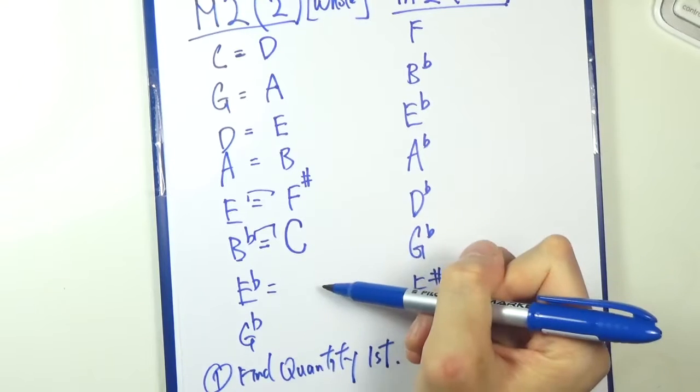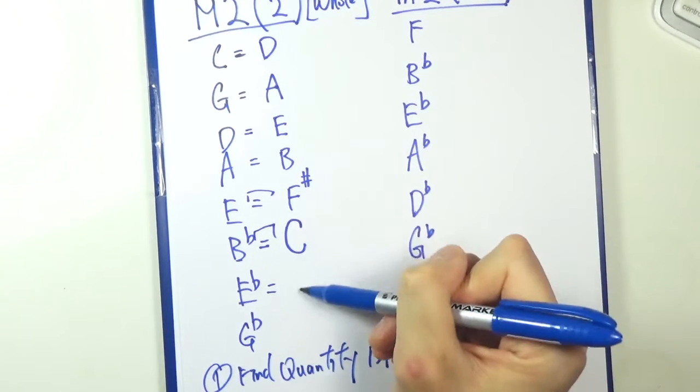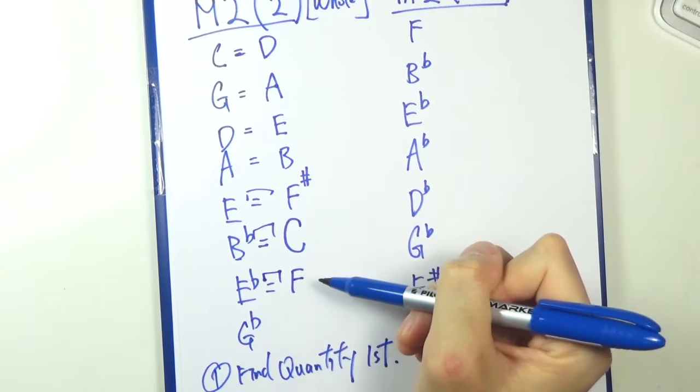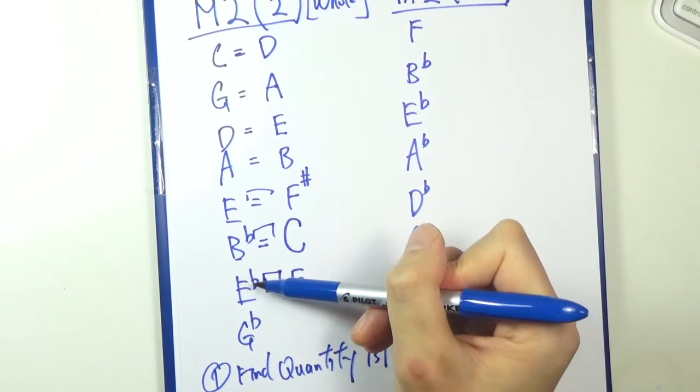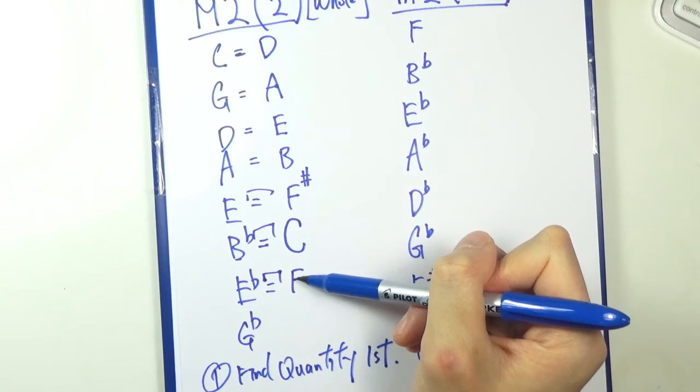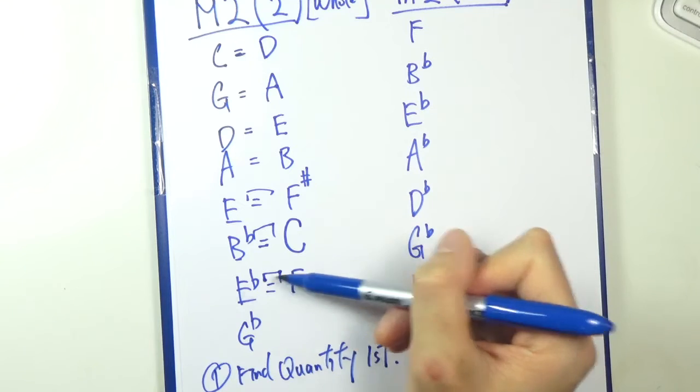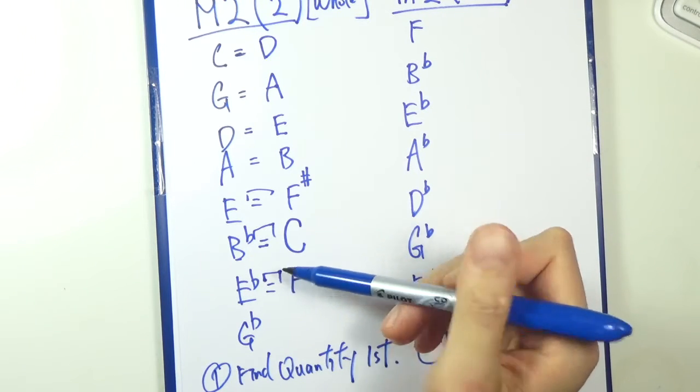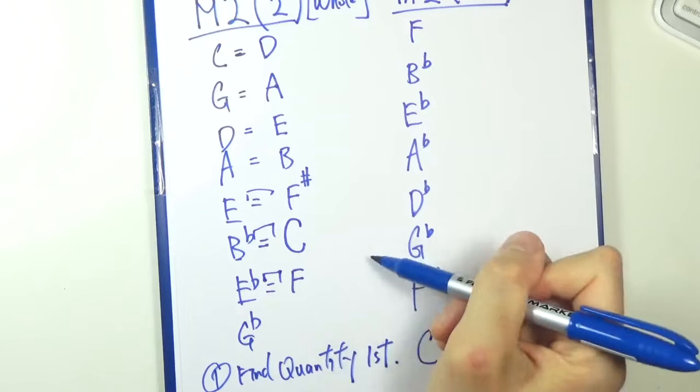E flat. Quantity first, so E and F. Check the interval here. So E and F originally is a half step. E flat F, that's a whole step. We want a whole step, so we're good.